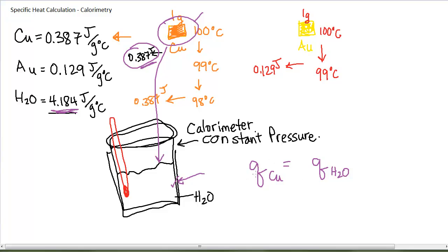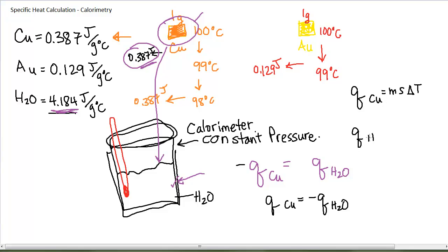Any heat released by the copper is going to be absorbed by the water. But recall we have a sign convention: the copper is releasing the heat and the water is absorbing the heat, so these two have different numerical signs. It doesn't matter if we make the Q of copper negative or the Q of water negative — it means exactly the same thing. Numerically they are equivalent in absolute value, but their sign is different. The Q of copper equals ms delta T, and the Q of water equals ms delta T.